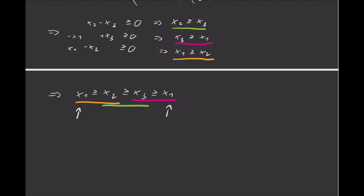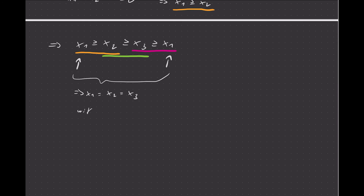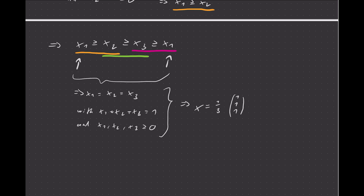That means x1 = x2 = x3. Together with x1 + x2 + x3 = 1 and x1, x2, x3 ≥ 0 — since x is a strategy vector — that implies all the x's are equal and they are all 1/3. So the vector (1/3, 1/3, 1/3) is optimal.